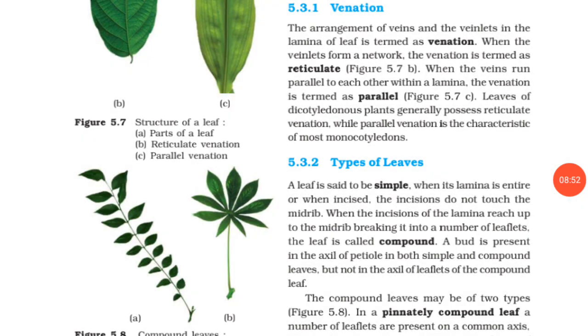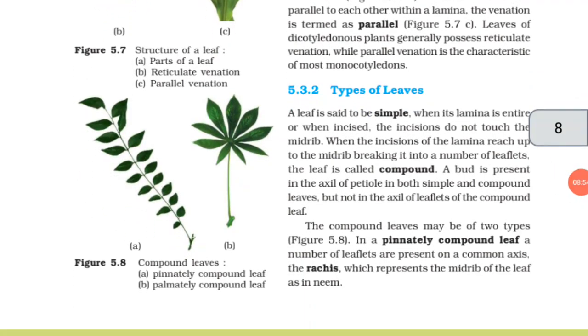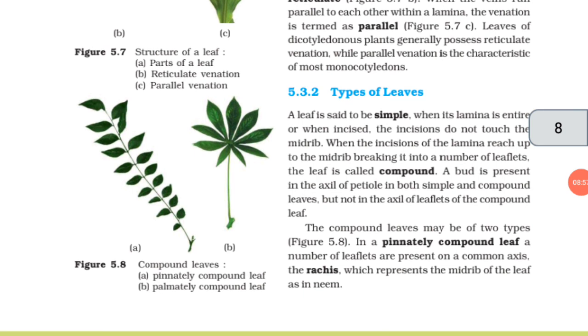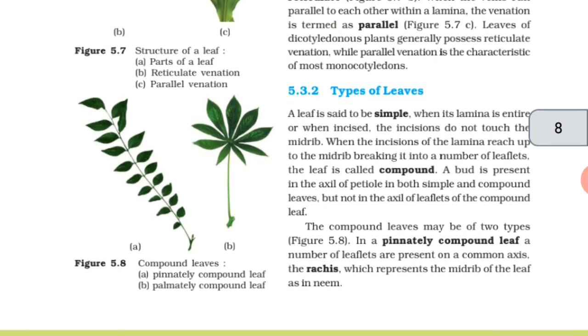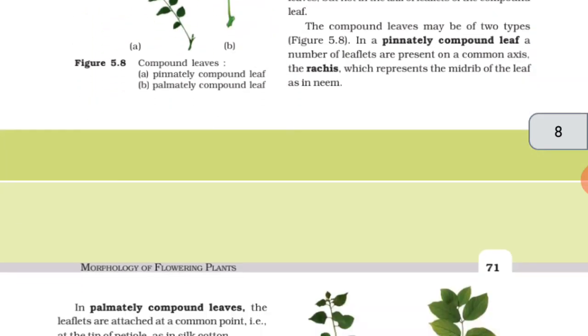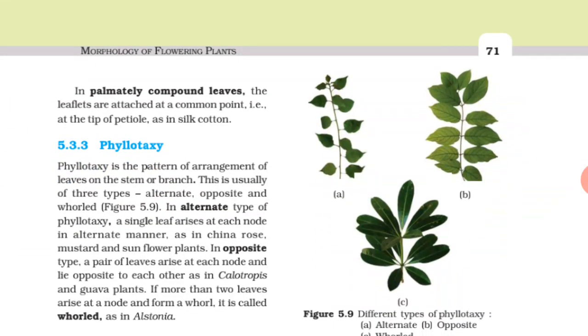The compound leaves may be of two types. In a pinnately compound leaf, a number of leaflets are present on a common axis, the rachis, which represents the midrib of the leaf as in neem. In palmately compound leaves, the leaflets are attached at a common point, i.e., at the tip of petiole as in silk cotton.